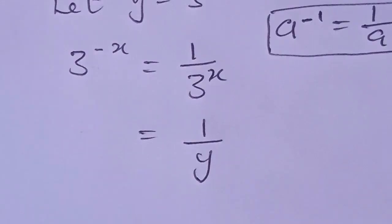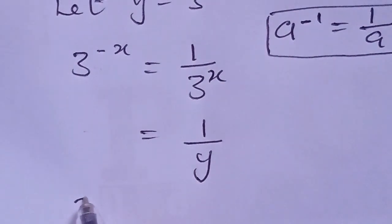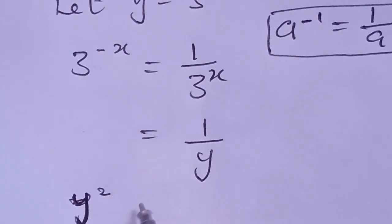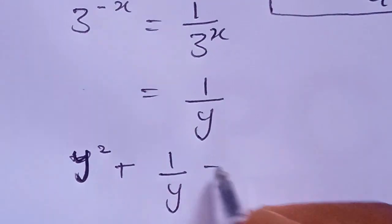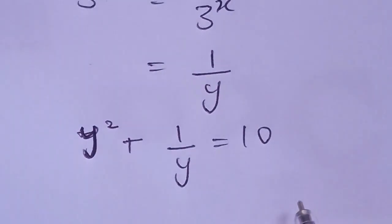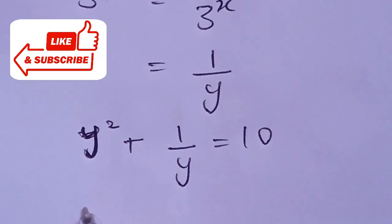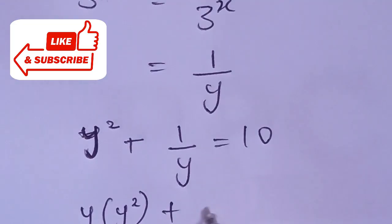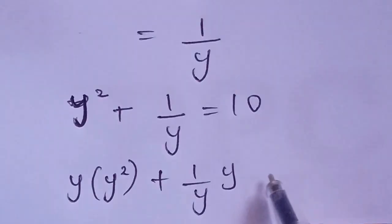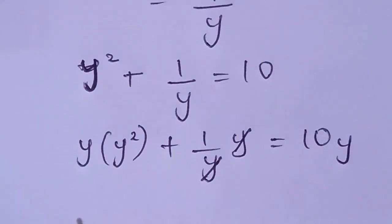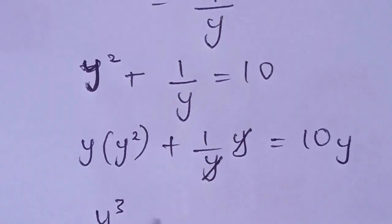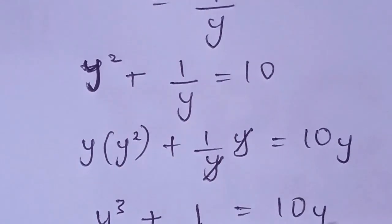The whole expression can now be transformed into y squared plus 1 over y equal to 10. From here we do some manipulation — we multiply both sides by y. So we have y times y squared plus 1 over y, multiplied by y, equal to 10y. Our expression becomes y to the power of 3 plus 1 equal to 10y.